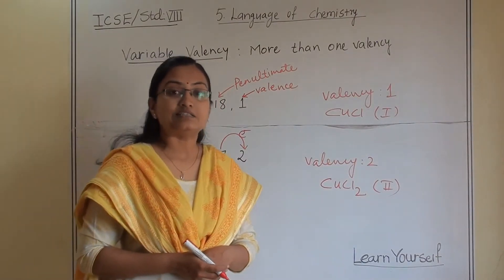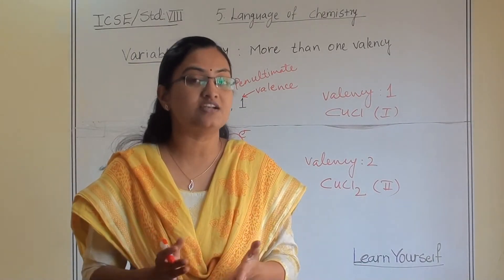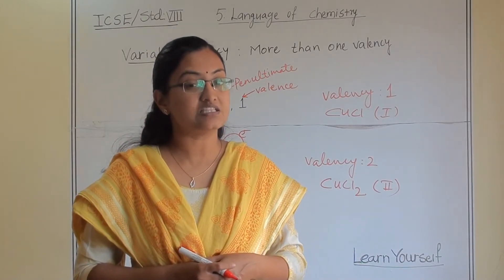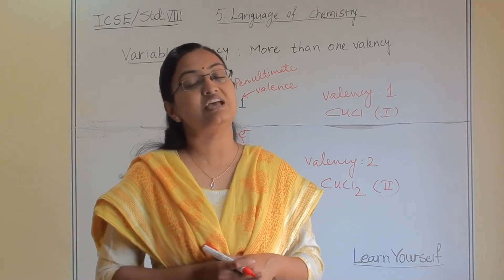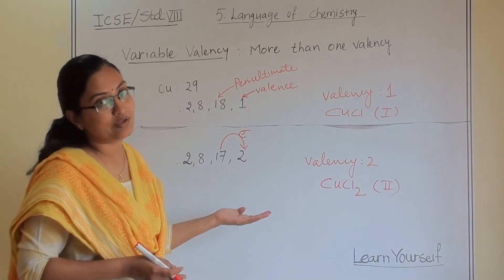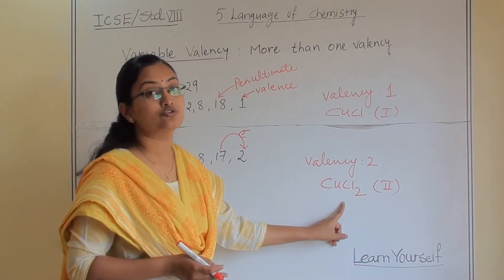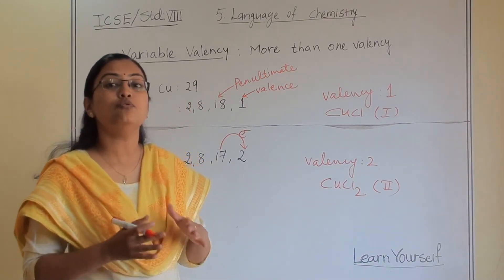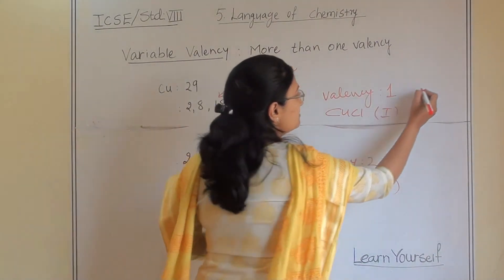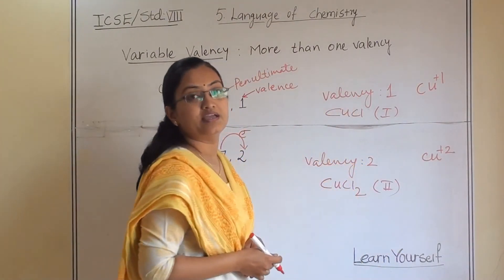We know that sometimes we write iron 2 oxide and sometimes iron 3 oxide. So iron also shows variable valency — Fe can be Fe²⁺ or Fe³⁺. The same reason is behind iron's variable valency. Here copper 1 chloride forms and here copper 2 chloride forms because copper shows variable valency. The variable valencies of copper are Cu⁺¹ in one case and Cu⁺² in the other.